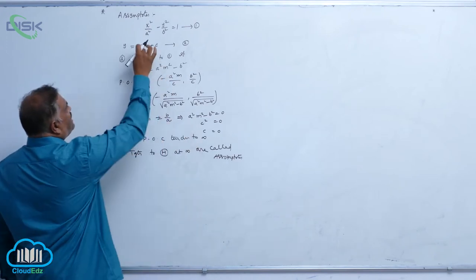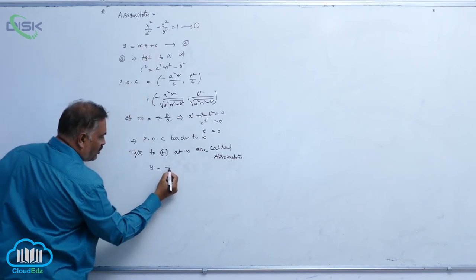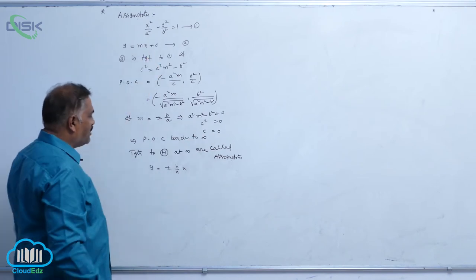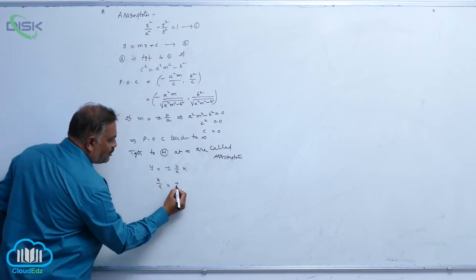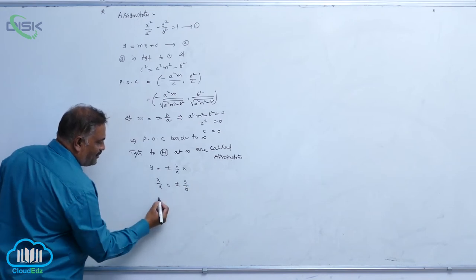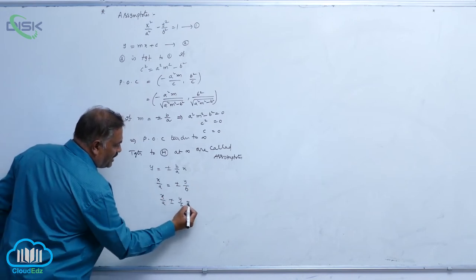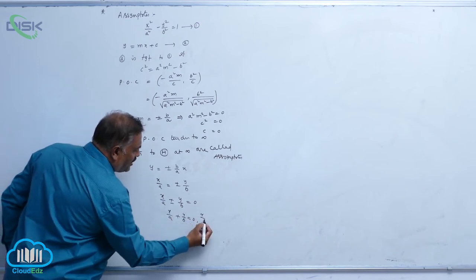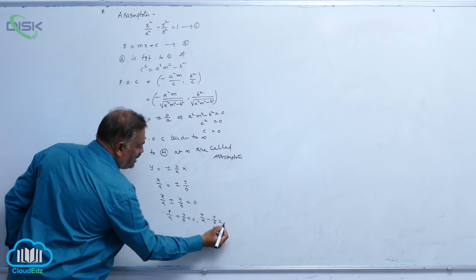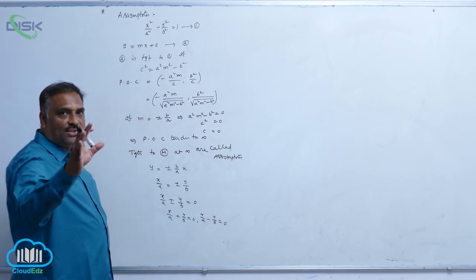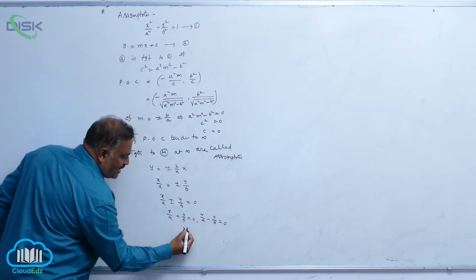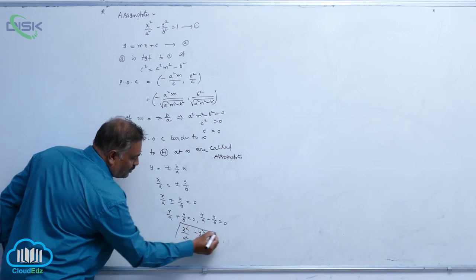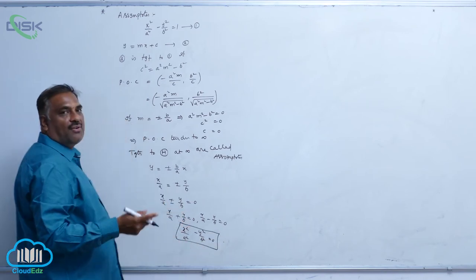Substituting these values into the equation, y = ±(b/a)x, and since c = 0, it becomes x/a = ±y/b, that is x/a ± y/b = 0. So x/a + y/b = 0 and x/a − y/b = 0 — both pass through the origin. The combined equation is x²/a² − y²/b² = 0. This is the pair of asymptotes.